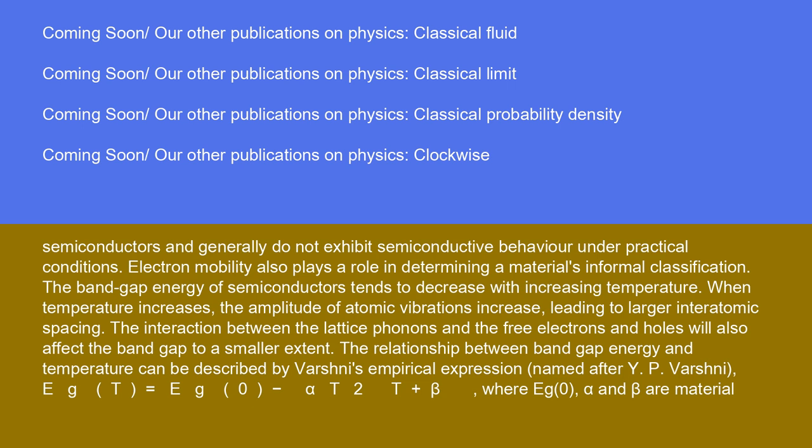The relationship between band gap energy and temperature can be described by Varshni's empirical expression, named after Y. P. Varshni: Eg(T) = Eg(0) - αT²/(T+β), where Eg(0), α, and β are material constants.